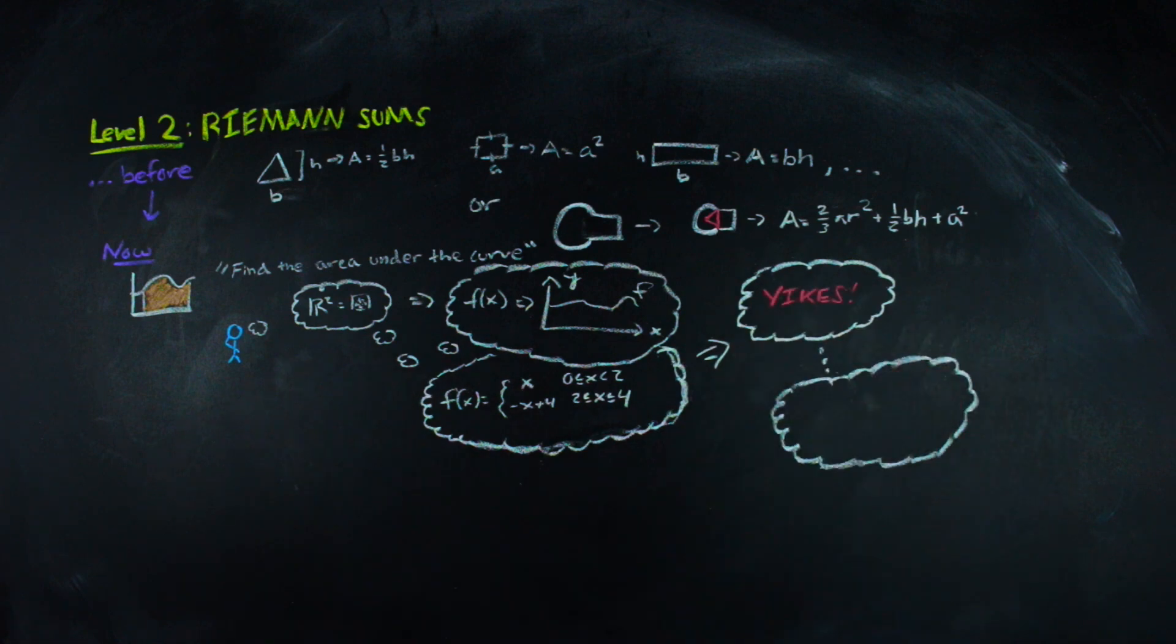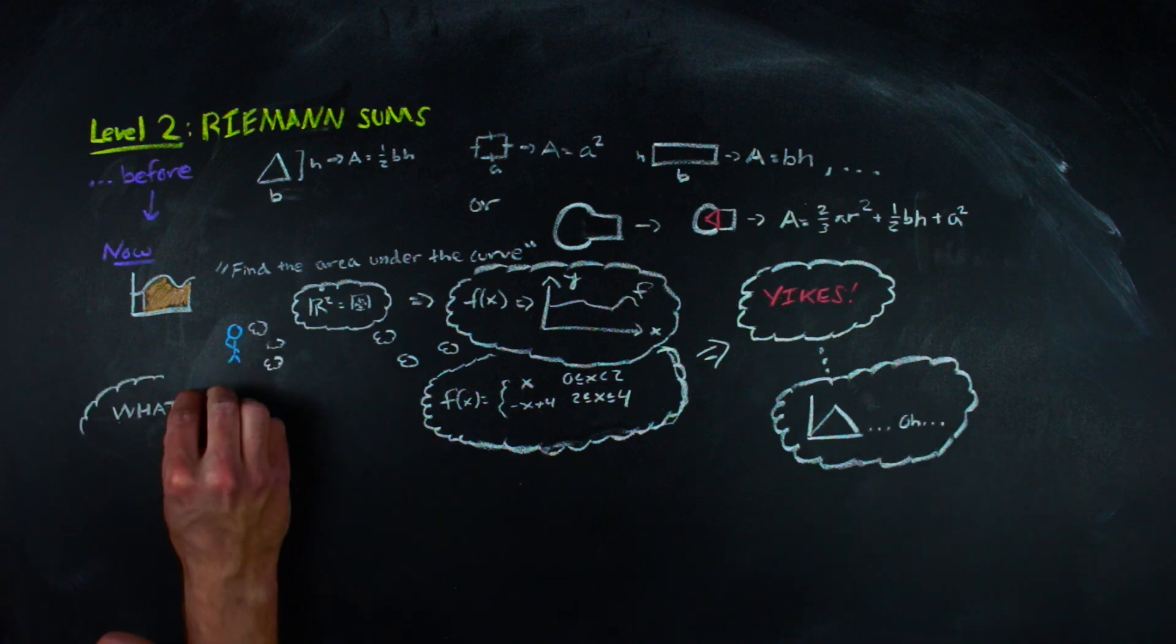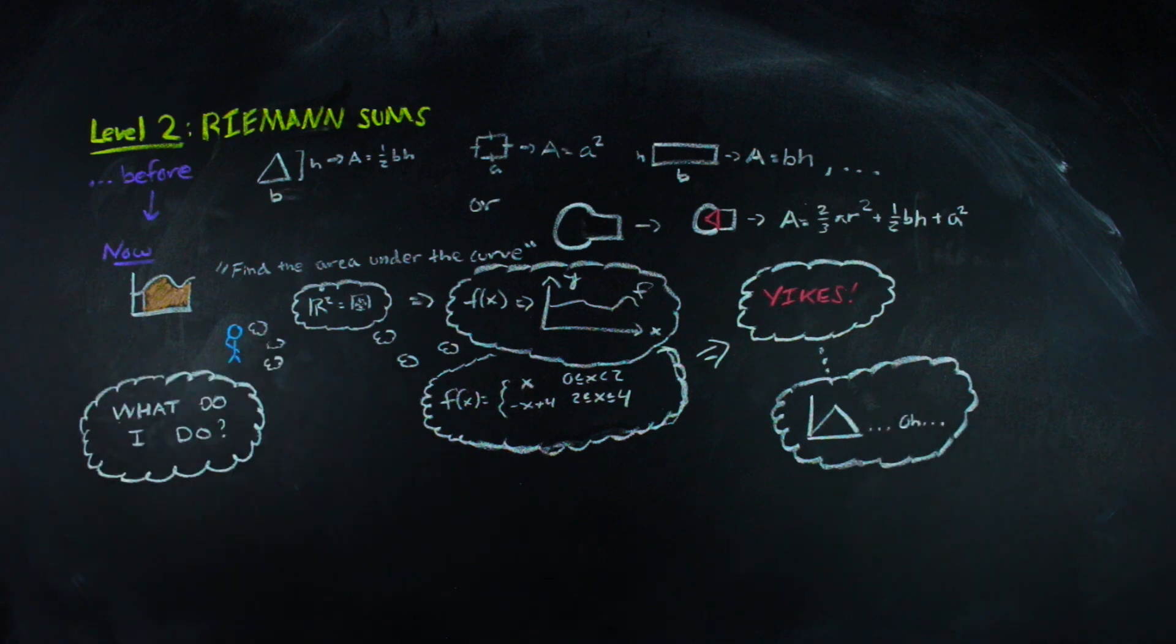And when you do, you see the triangle and you kind of laugh a little bit and go, oh, that's stupid. It's just a triangle, and move on with life. But here we are faced with a squiggle and an area to compute. So what do you do?